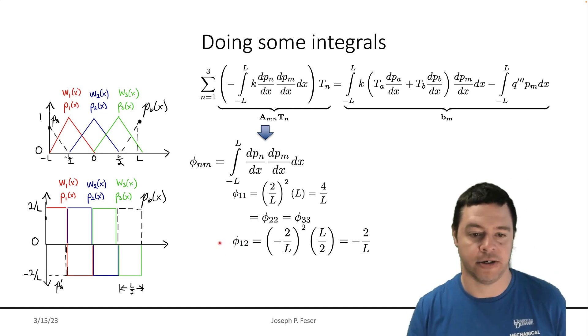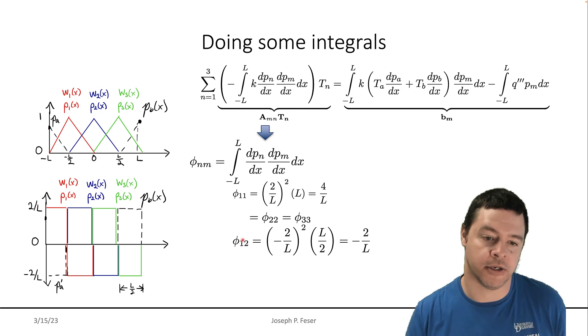And what about the off diagonal? So this is the case when N is equal to one and M is equal to two. So in that case, this only partially overlaps with this function, only in this region here. And they have opposite signs. So if you check out that value, it's minus two over L squared times the distance over which they overlap, which is L over two. So that's what this is.